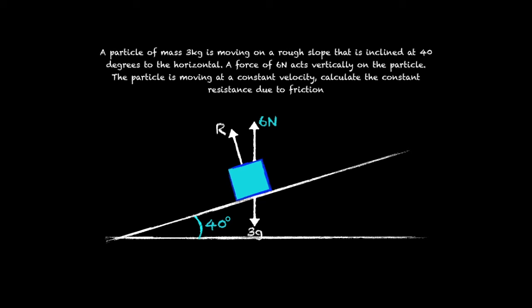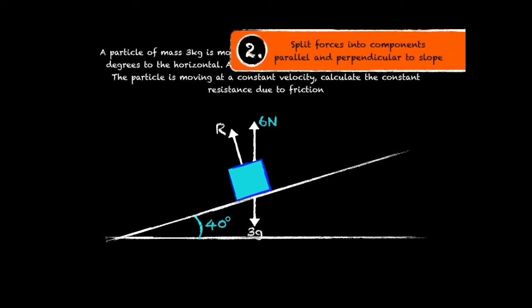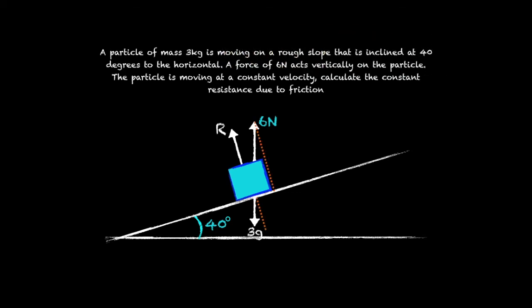So now we should split the 6 newton force and the weight into components that are perpendicular and parallel to the slope. And as we've seen before the angle between the line of action of the weight and the orange dotted line is equal to the incline of the slope.